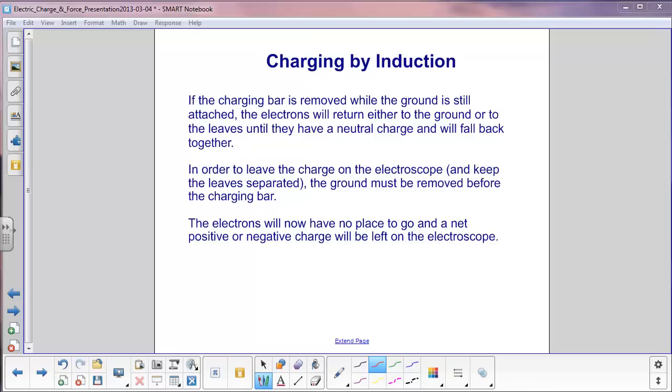If you want to leave the charge on the electroscope and keep the leaves separated, the ground must be removed before the charging bar. Now the electrons have nowhere to go and you will leave a net positive or negative charge on the electroscope.